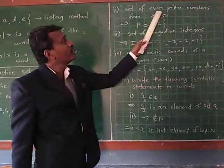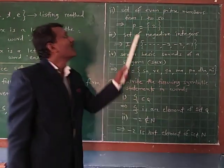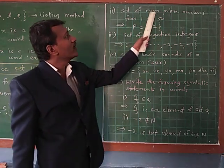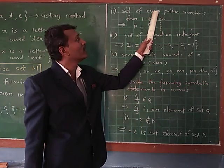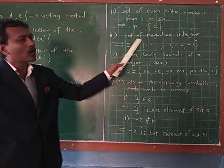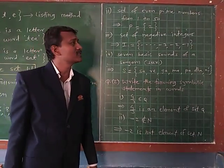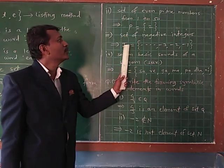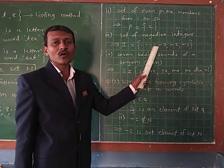Second example: the set of even prime numbers from 1 to 15. The answer: P = {2}, only 2 members. 2 is the only even prime number. We don't write all prime numbers; therefore P = {2}. Third example: the set of negative integers. There are three types of integers — positive integers, negative integers, and zero — but here we write only negative integers. I = {-1, -2, -3, ...}. These are called the negative integers.